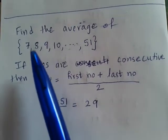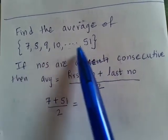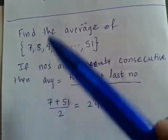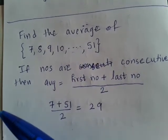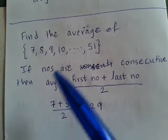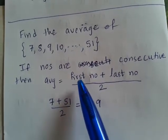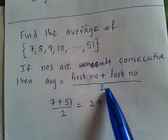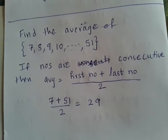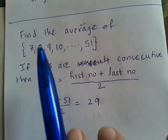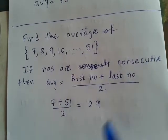Now consider this example: find the average of 7, 8, 9, 10 up to 51. What do you observe here? They are consecutive numbers — consecutive means one after the other: 7, then 8, then 9. When you are given consecutive numbers, for finding their average you can straightaway add the first number and the last number and divide by 2. So (7 + 51) divided by 2 equals 58 divided by 2, and the answer is 29.